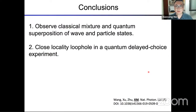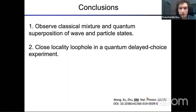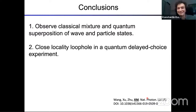To conclude the first part: with our experiments we observed both the classical mixture and the quantum superposition of wave and particle states. The classical mixture had been observed before, but quantum superposition is observed experimentally for the first time. With our space-time configuration, we close the locality loophole in the quantum delayed choice experiment. This work was published last year in Nature Photonics. I will pause here — if you have any questions before the second part, please raise your hand in Zoom.